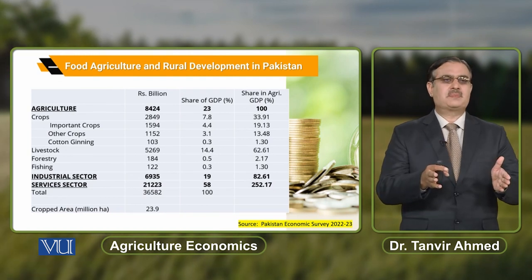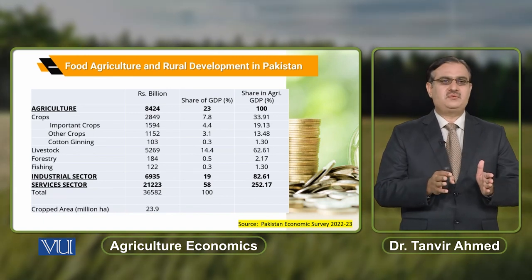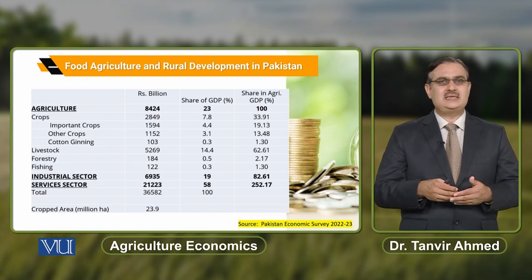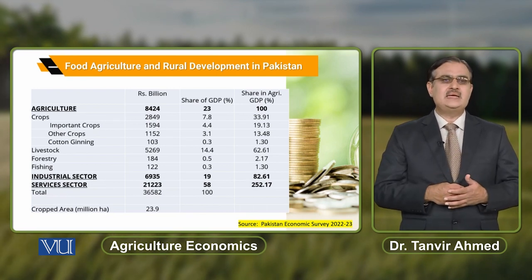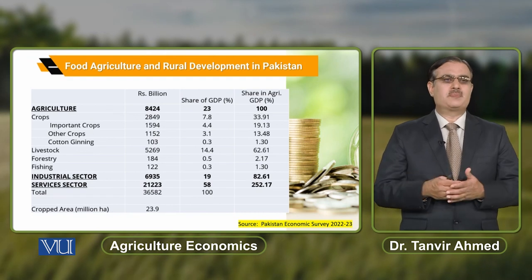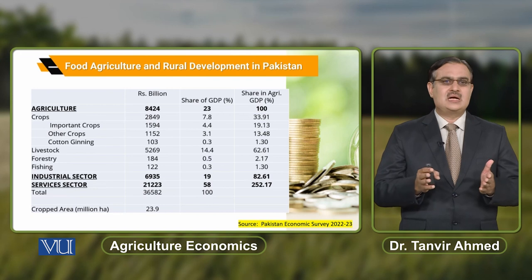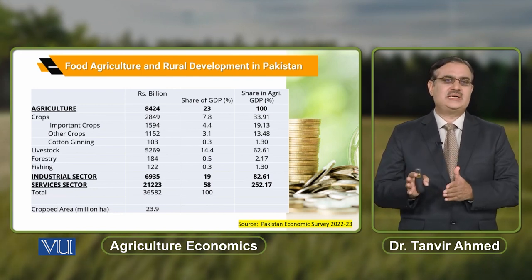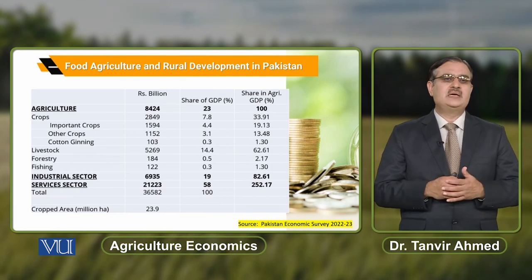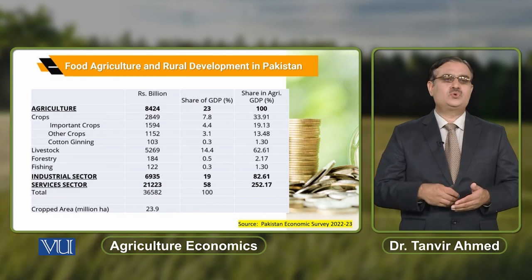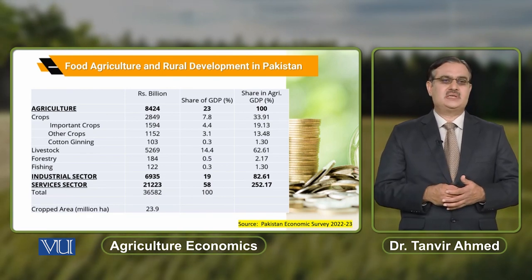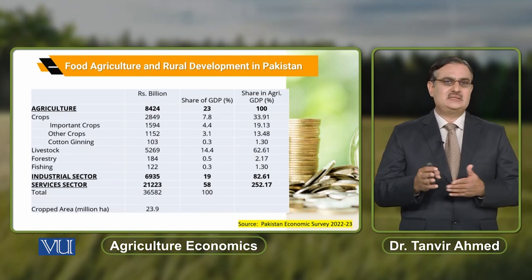اس table میں ہم report کر رہے ہیں contribution of crop sector، livestock sector، forestry and fishing in the total agricultural sector. اگر ہم اس break-up کو دیکھیں، تو in year 2021–2022 جو crop sector کا share تھا in the total GDP، it is approximately 7.8%. اور جو livestock تھا، اس کا share تھا 14.4%. میں یہ total GDP of Pakistan کے reference سے بات کر رہا ہوں. Industrial sector کا share total GDP میں تھا around 19%, while the services sector contributes 58% in the GDP of Pakistan.